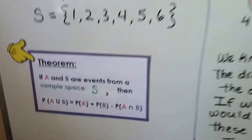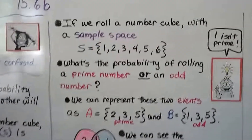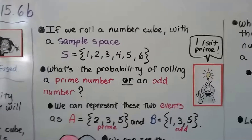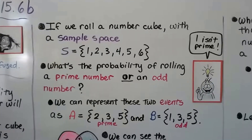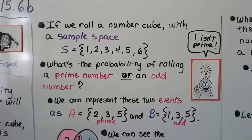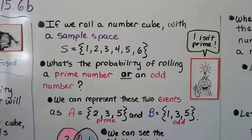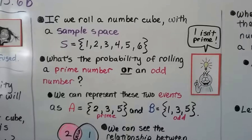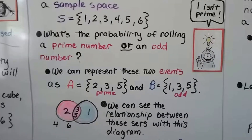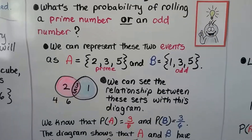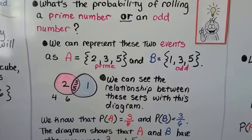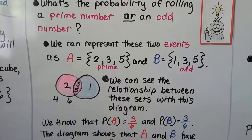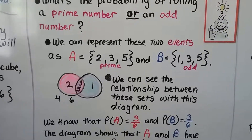If we roll a number cube with sample space 1, 2, 3, 4, 5, 6, what's the probability of rolling a prime number or an odd number? Remember, 1 isn't prime. We can represent these two events as A equals {2, 3, 5} — those are the prime numbers — and B equals {1, 3, 5}, the set for odd numbers.